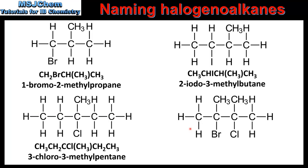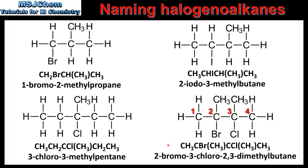In our last example we have 4 carbon atoms in the longest chain. One carbon atom is bonded to a bromine and a methyl group, and another carbon atom is bonded to a chlorine and another methyl group. So this compound is named 2-bromo-3-chloro-2,3-dimethylbutane.